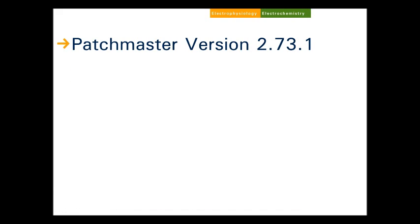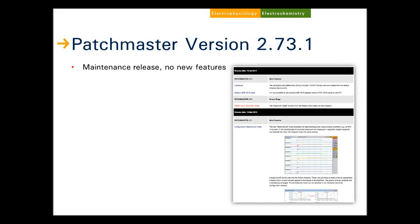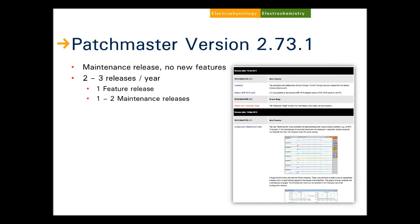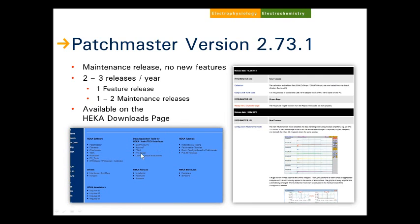About a month ago we also released Patchmaster version 2.73.1. This is a maintenance release — it has no new features. On our download page we have a 'done list' which shows all the information regarding what changes with each release version. Hecker usually tries to have two to three releases per year, including one major feature release and one to two maintenance releases, typically for our Patchmaster and Potmaster software packages. These updates are available free of charge and can be downloaded from the Hecker download page, which also includes manuals, downloads, brochures, and additional tools.